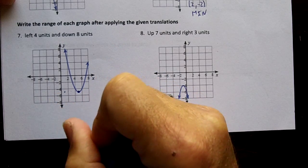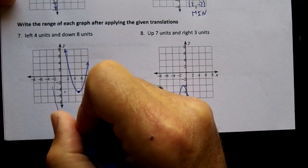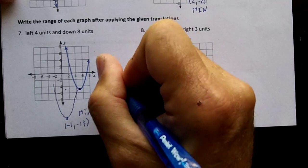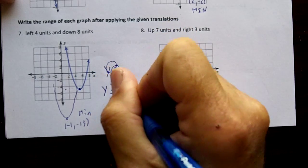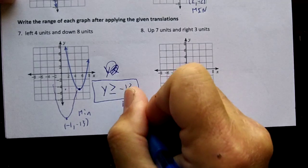So we're going to be at negative one comma negative 13. We'll be way off the graph. The graph is going to go up in it. This is going to be a minimum value. So it's going to be y greater than or equal to negative 13 because we have a minimum value.